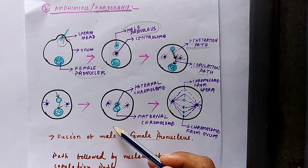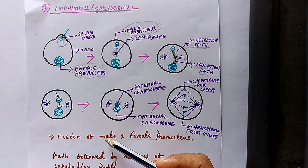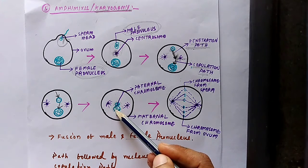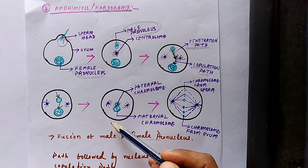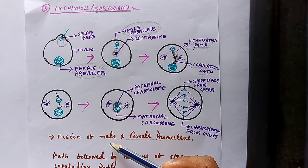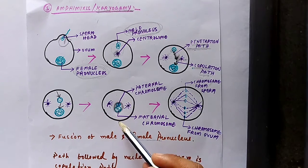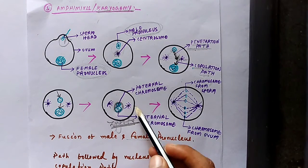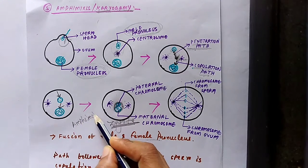The nuclear membrane of the male pronucleus and the nuclear membrane of the female pronucleus both disappear. Then the chromosomes of both nuclei fuse together to form a diploid zygote. The haploid male pronucleus and haploid female pronucleus fuse together to form a diploid structure known as the zygote. This fusion of two gametic nuclei is known as amphimixis.